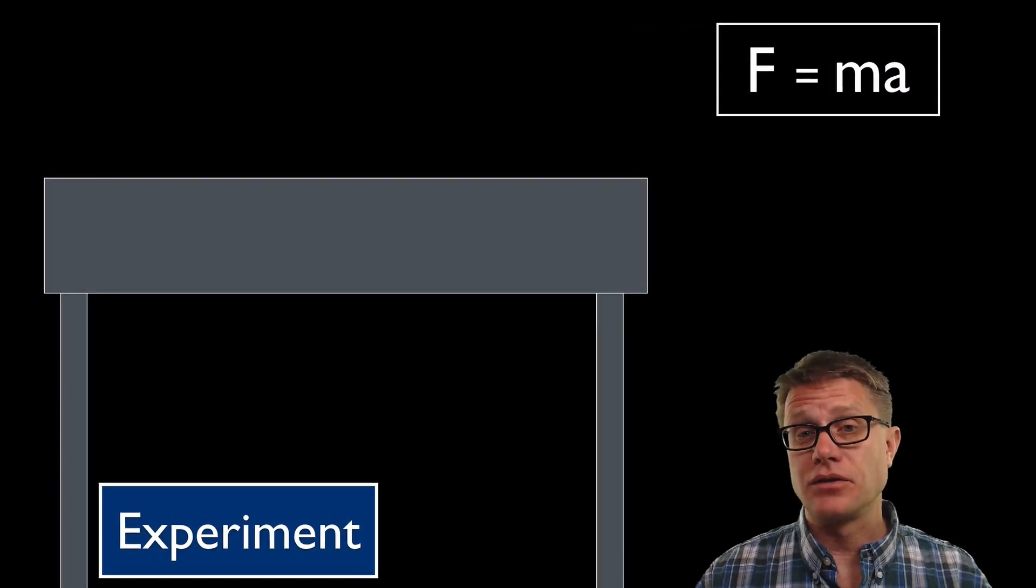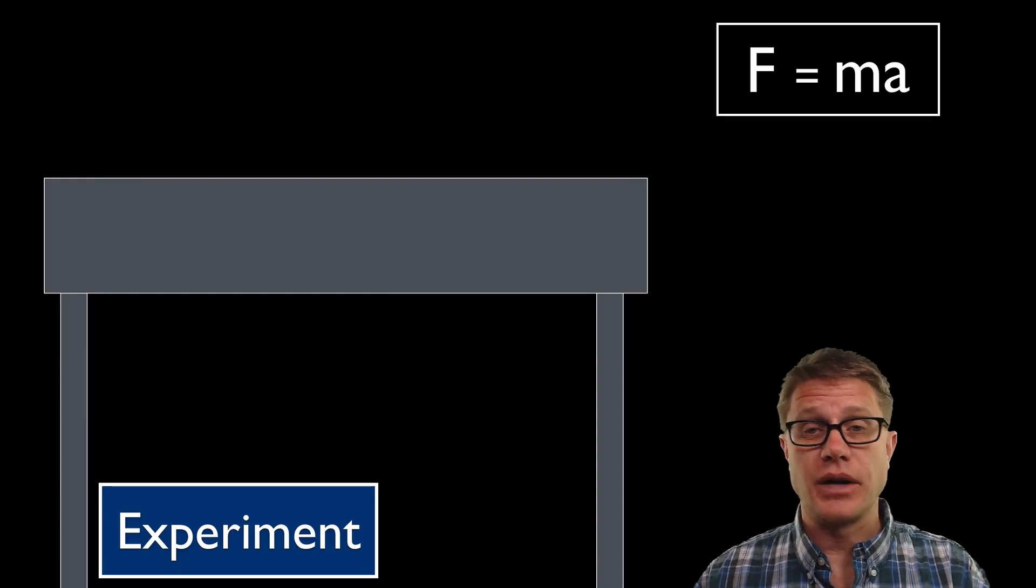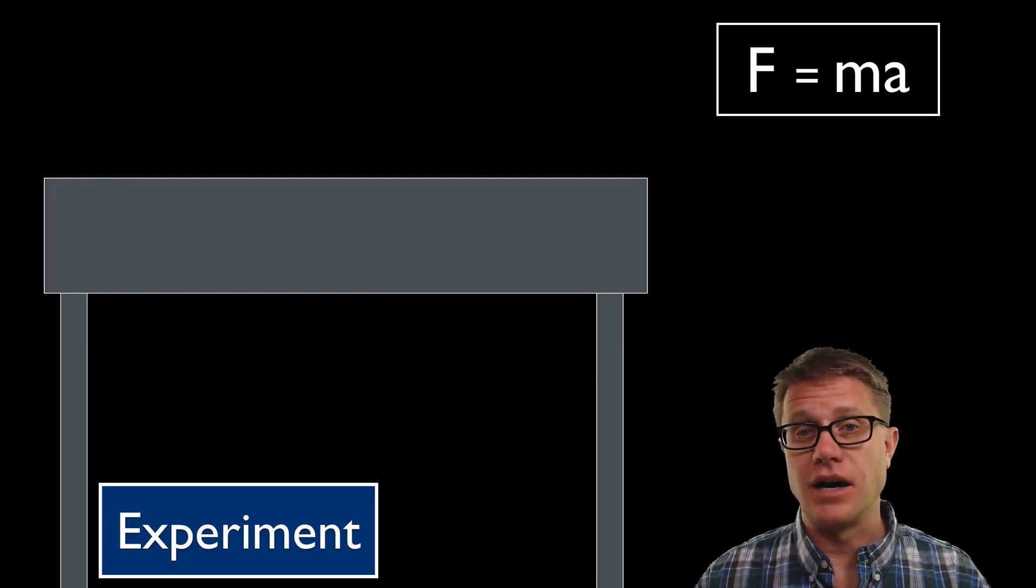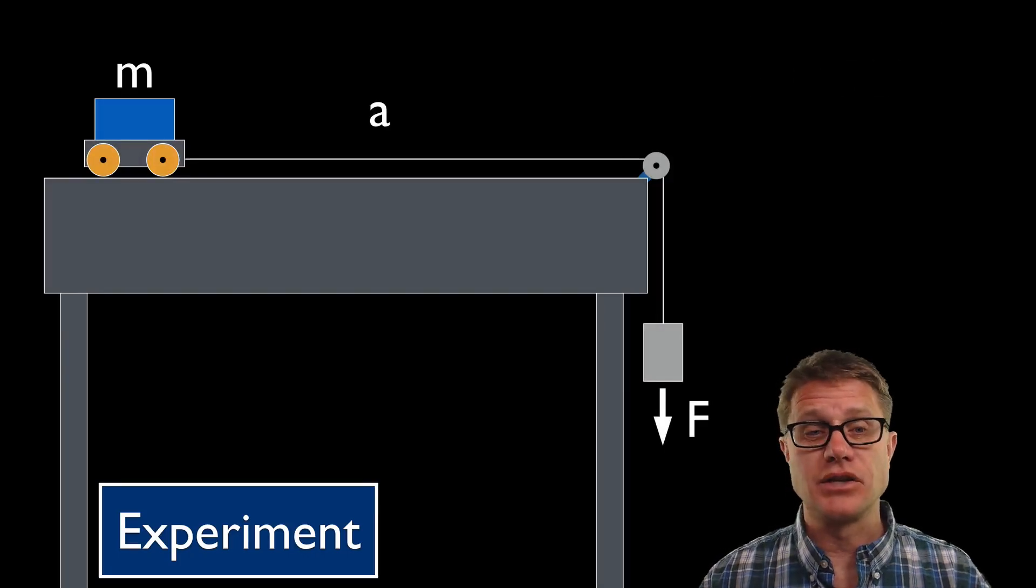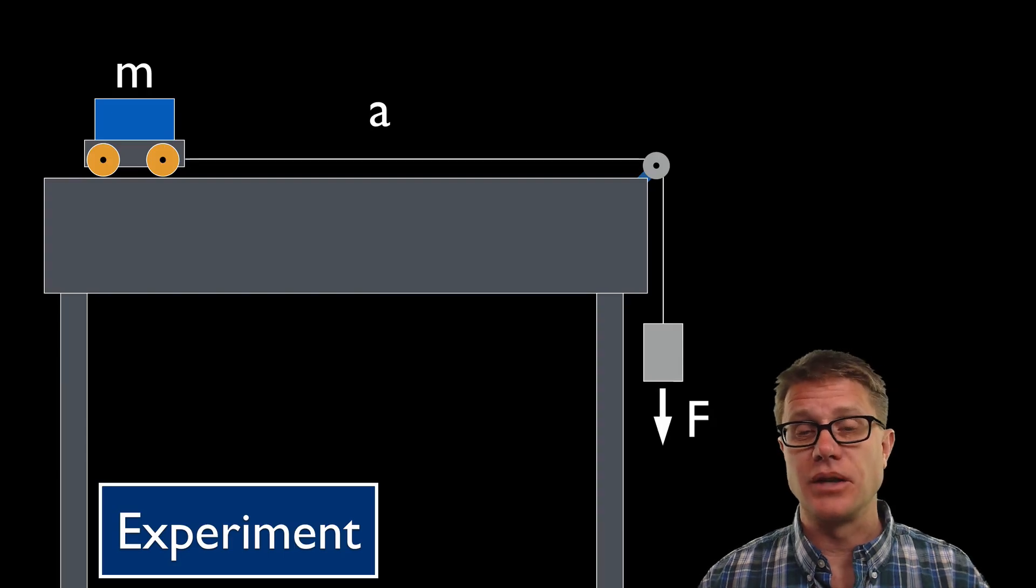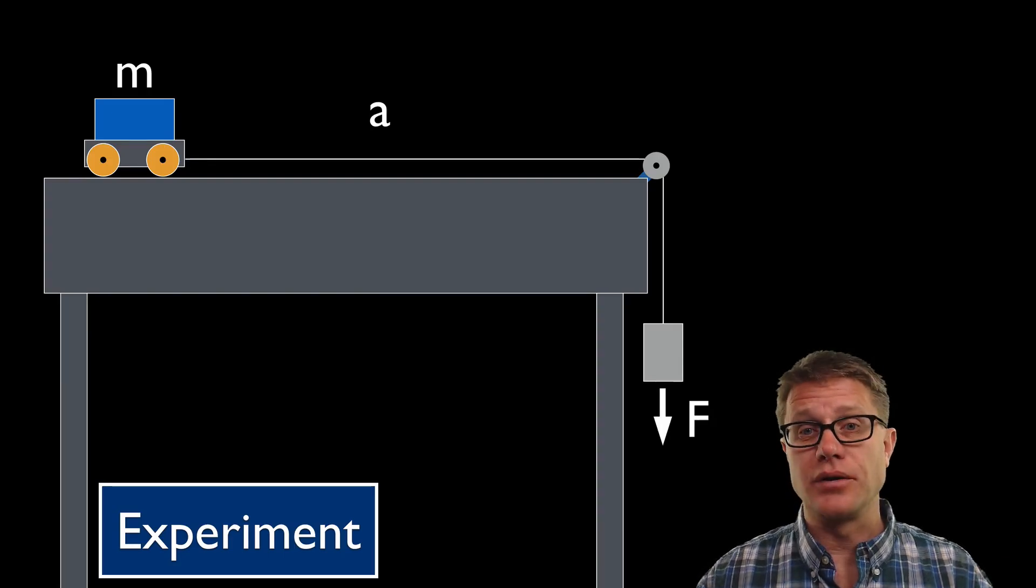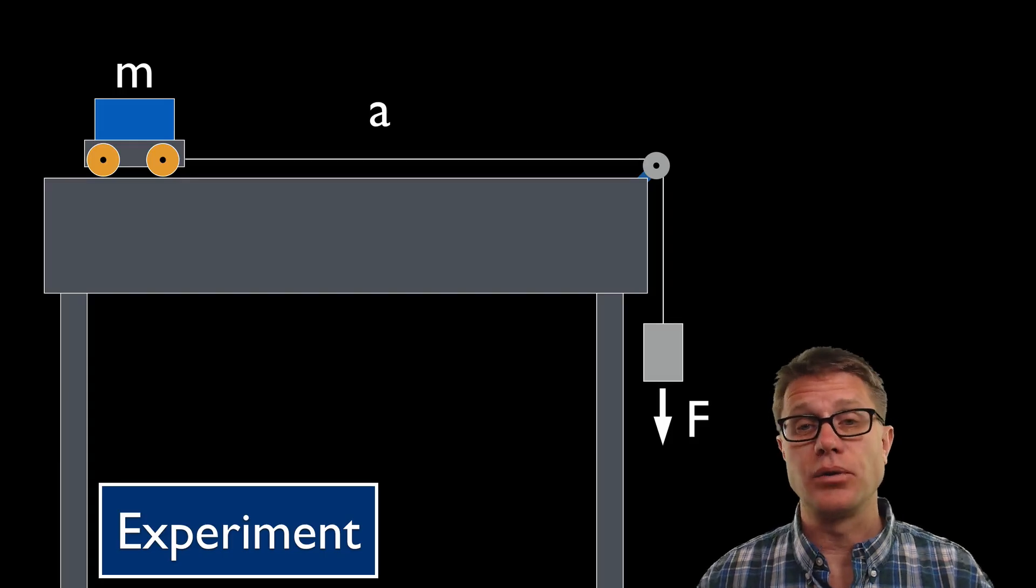Now another way to do modeling instruction is just through experiments. And so when I taught physics or learned physics, I learned Newton's second law, a better way to do that through modeling instruction is just give them a modified Atwood machine and say, I want you to tell me the relationship between force, mass and acceleration of the cart. They should gather a bunch of evidence and they should take that and put it into a mathematical model that they could deploy elsewhere.